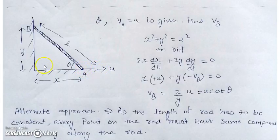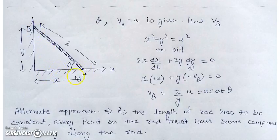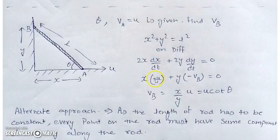In the next example, a rod slides on a floor and a vertical wall. The bottom end has speed u and we need to find the velocity of the upper end B, i.e., find vB. We mark positions x and y along the directions of motion of each end. The length constraint gives x² + y² = L². Differentiating: since x is increasing, dx/dt = +u, and since y is decreasing, dy/dt = −vB. This gives vB = (x/y)·u.